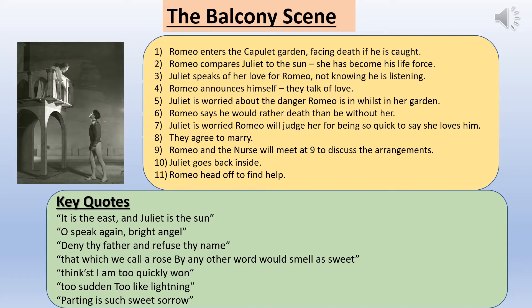Juliet speaks of her love for Romeo not knowing he is listening — she doesn't know he's there at the beginning. Romeo then announces himself and they talk of love. Juliet is worried about the danger Romeo is in whilst in her garden. Romeo says he would rather death than be without her. Juliet is worried Romeo will judge her for being so quick to say she loves him — it's not really how a young lady should have behaved in those days. They agree to marry. Romeo and the nurse will meet at nine to discuss the wedding arrangements. Juliet goes back inside and Romeo heads off to find help.